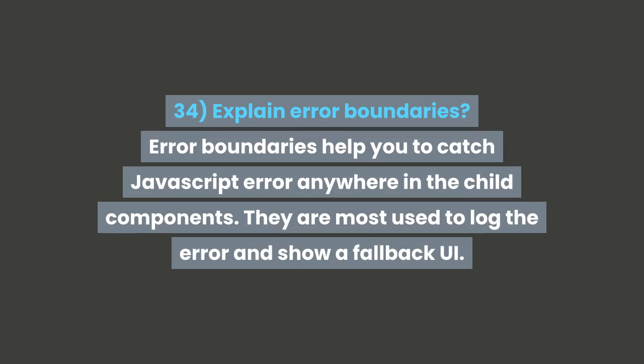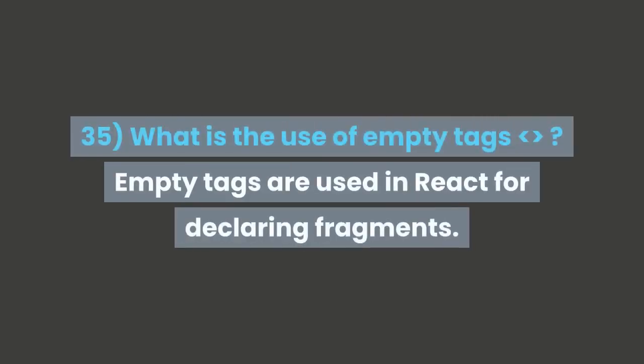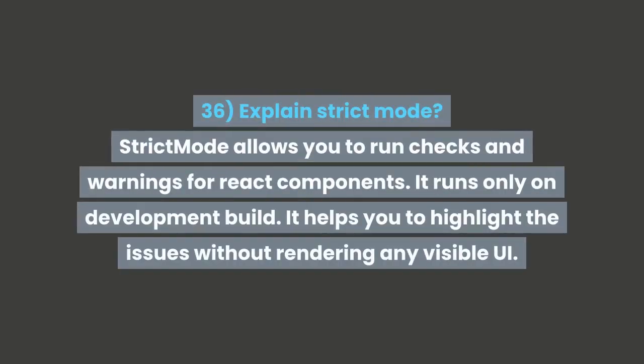Question 34: Explain error boundaries. Error boundaries help you to catch JavaScript errors anywhere in the child components. They are most used to log the error and show a fallback UI. Question 35: What is the use of empty tags? Empty tags are used in React for declaring fragments.